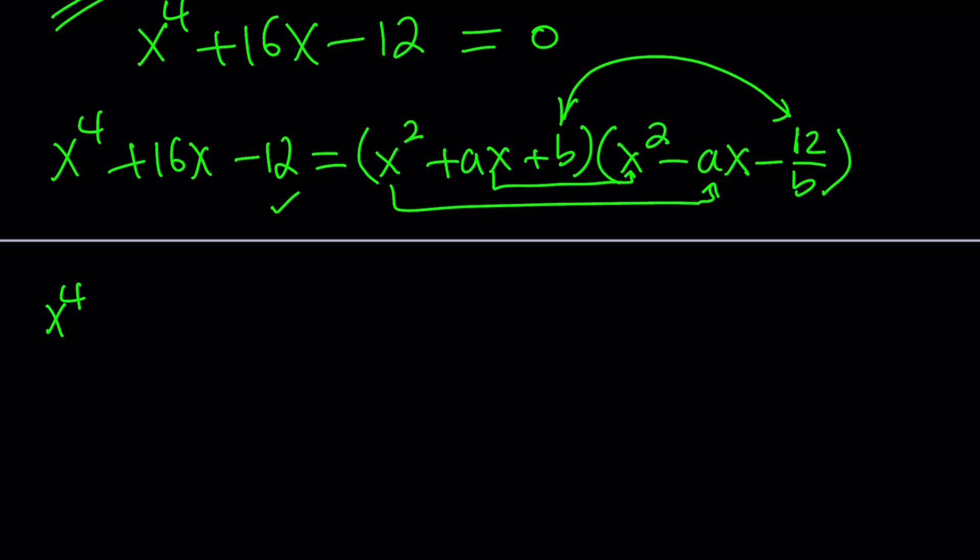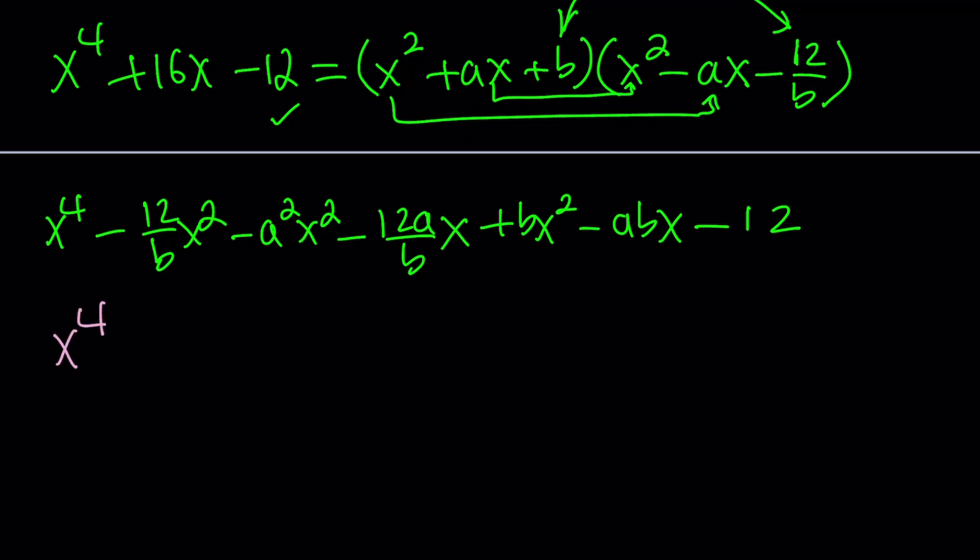You're going to get x squared times negative 12 over b, negative 12 over b x squared. And then we're going to distribute to ax minus a squared x squared minus 12 a over b x. And then finally, we have the b, which we need to distribute completely. And when we do, we're going to get bx squared minus a b x. And then finally, minus 12. But of course, minus 12 is just going to cancel out.